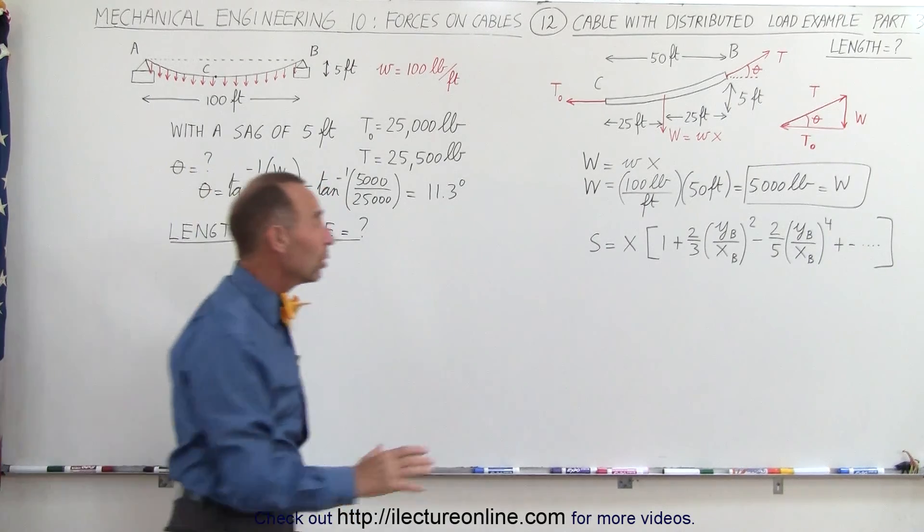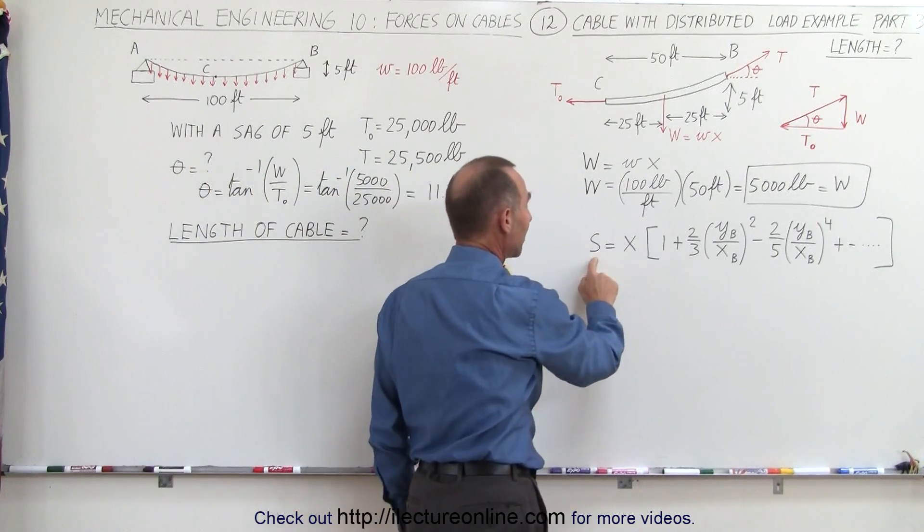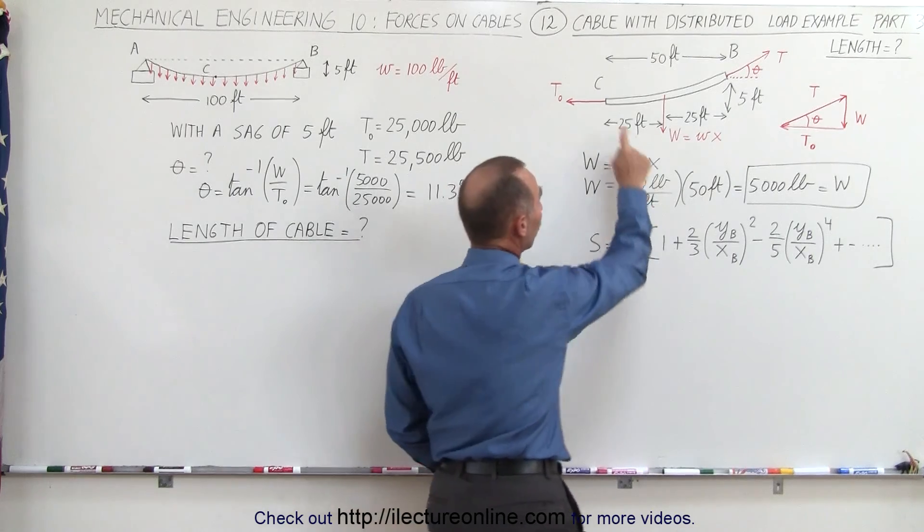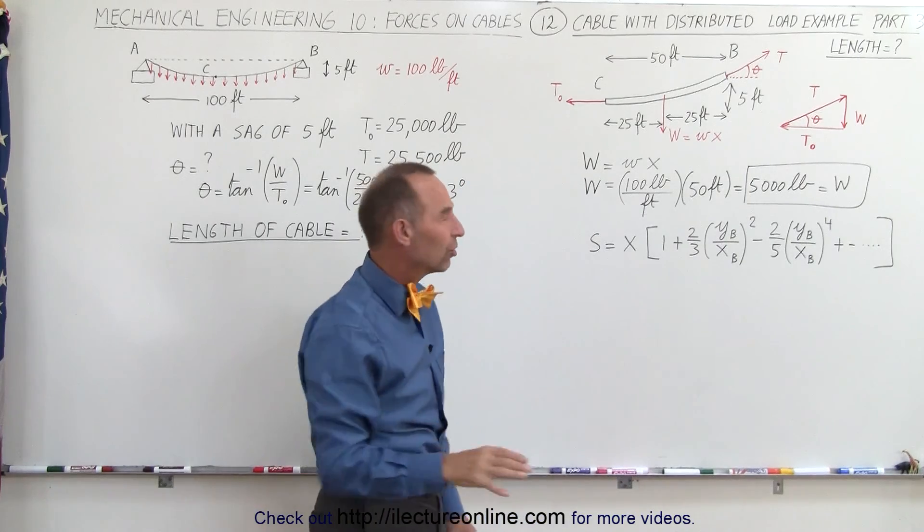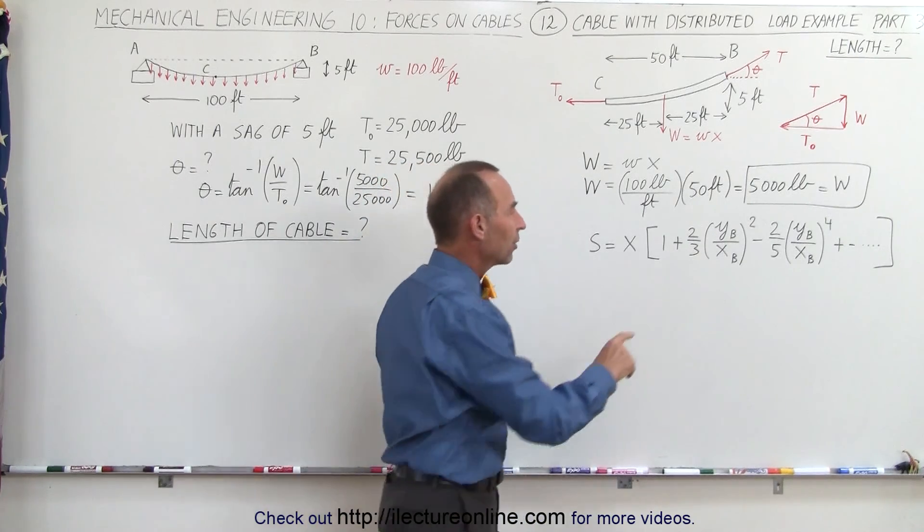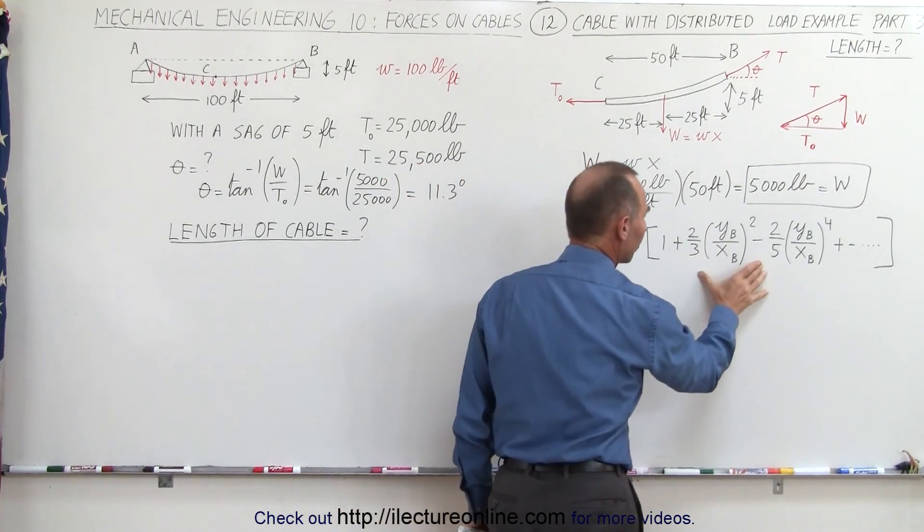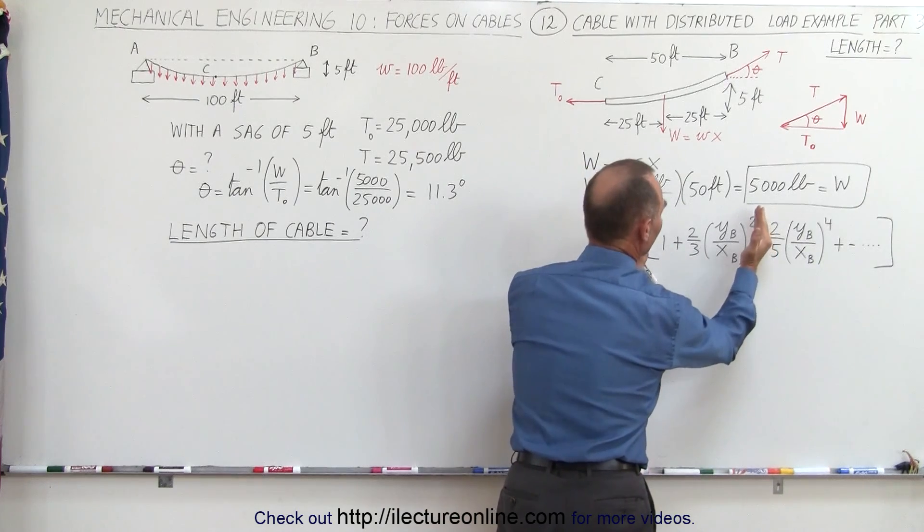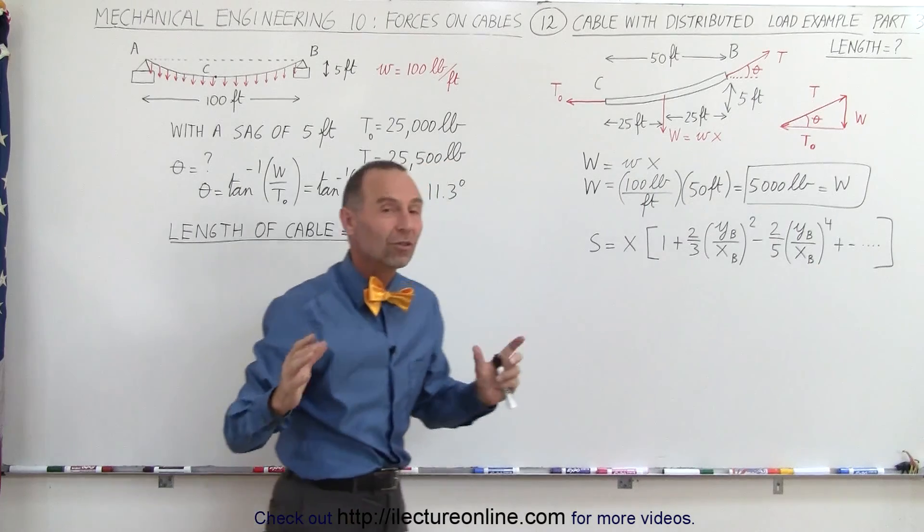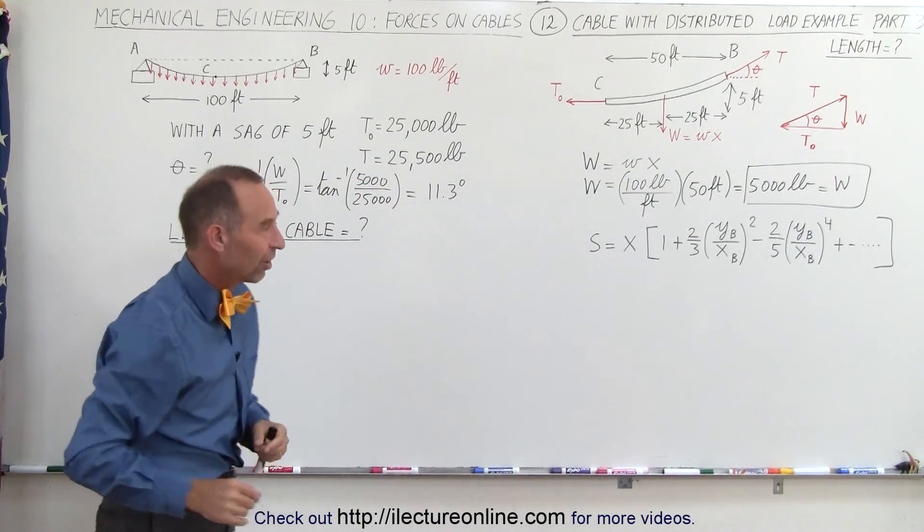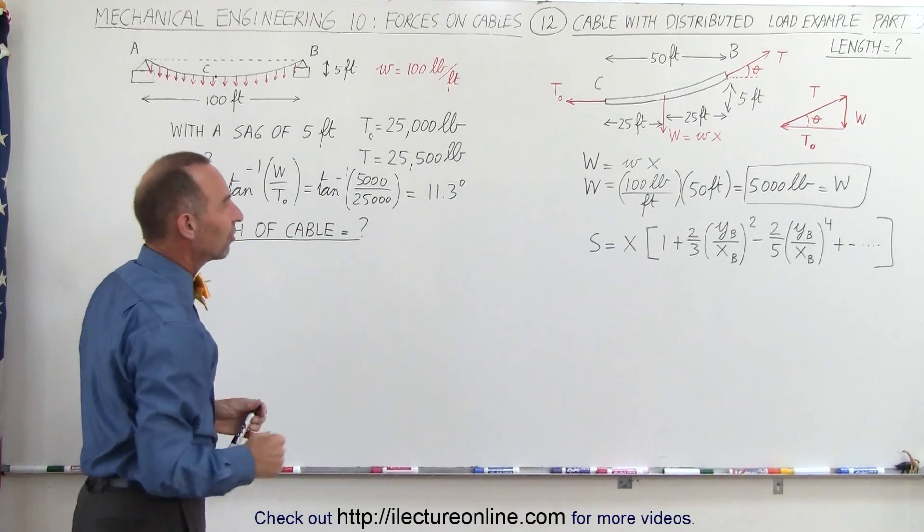The equation we use for the length along the cable, S, is equal to X, the horizontal distance, times this equation right here. We developed this equation in a previous video, and so now you can see that this is the result of that, and typically we only need the first two terms, but we're going to add the third term just so you can see that it's really not necessary. So let's plug in the values and see what we get.